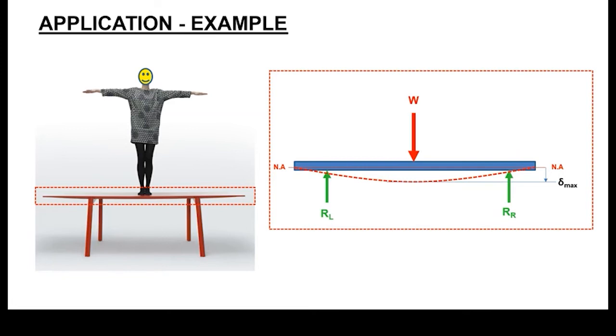The table legs are acting as the points of reaction or points of constraint, and depending on the distance of the deforming load to the support, that would depict how far or how much the table will deflect. This symbol, delta, represents deflection. This is how far the surface or the neutral axis has been displaced due to the applied load and constraint conditions.